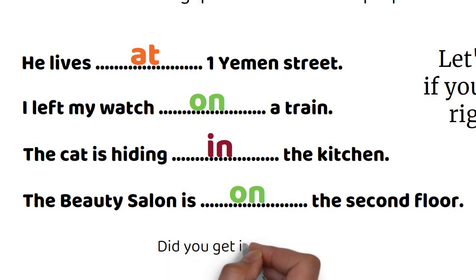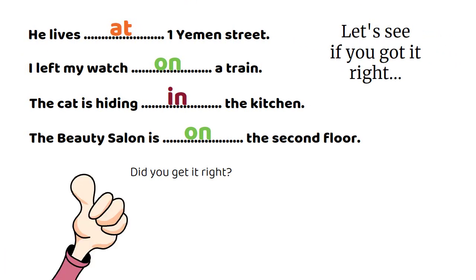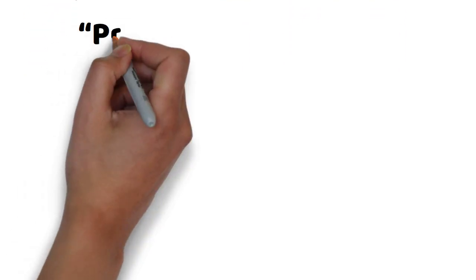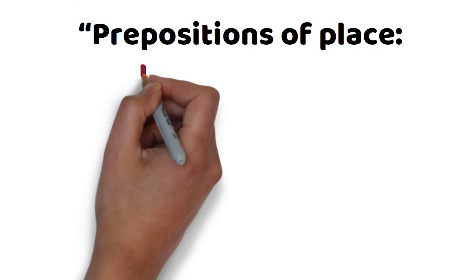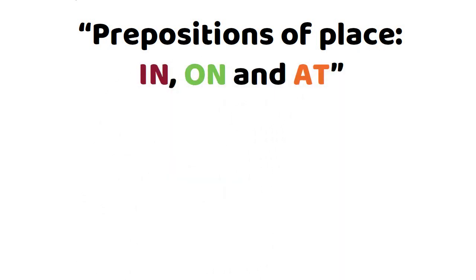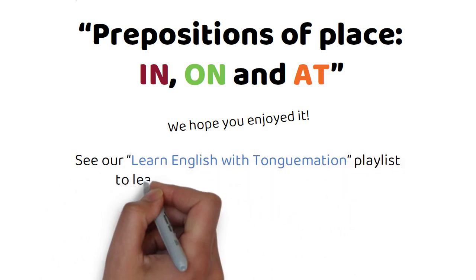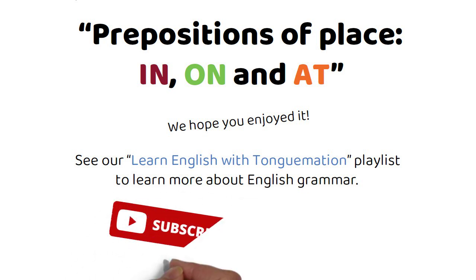Did you get it right? If you did, then well done. Today's topic was prepositions of place: in, on, and at. We hope you enjoyed it. See our Learn English with Tangmation playlist to learn more about English grammar. Until next time, we'll see you next time.